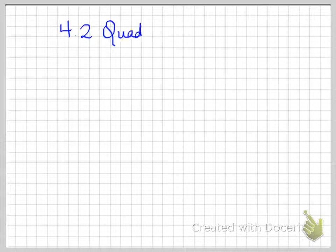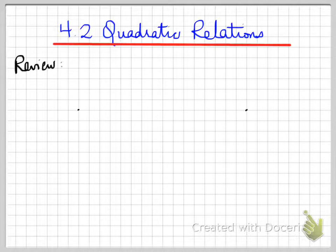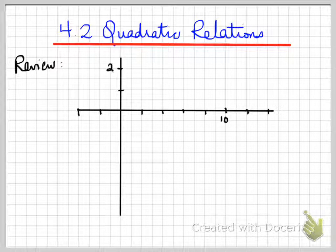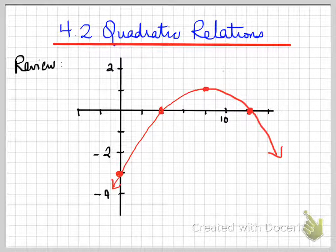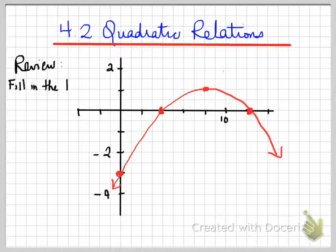We're looking at section 4.2, quadratic relations. We're looking at a review right now — just a review of a particular graph, a random graph given to you. We're going to look at what are the different parts of a parabola that we learned.